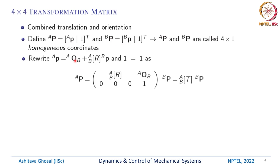We can rewrite the vector equation: A small p equals the vector locating the origin of the B coordinate system, plus the rotation matrix times the vector in the B coordinate system. We add one more equation, which is simply 1 equals 1. Now we can write these equations together in matrix form: A capital P equals a 4 by 4 matrix, where the top 3 by 3 is the rotation matrix ABR, the next column is AOB, and the last row is 0, 0, 0, 1, multiplied by B capital P.